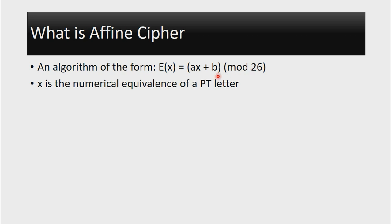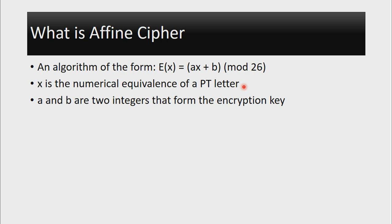So in this cipher, X is simply the numerical equivalence of a plaintext letter. So like we saw in the previous videos, when we are encrypting, first of all we have to encode the letter. A and B are two integers that will also be operating in this cipher, and these two integers form the encryption key. So like we saw in the Julius Caesar Cipher, we only had one key, but in the Affine Cipher we have two keys.